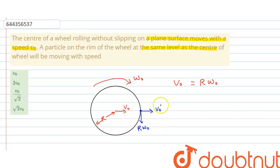So, net speed should be resultant of these two. And r omega0 is also equals to v0. So, net resultant of these two. Since these two have same magnitude.